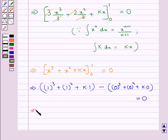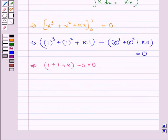This gives us 1 plus 1 plus k minus 0 equals 0, so k plus 2 equals 0, which gives us k equals minus 2.